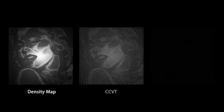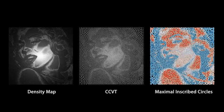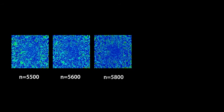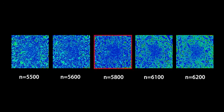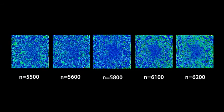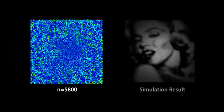We then compute the capacity-constrained Voronoi tessellation based on this density map, and inscribe a maximal circle inside each tessellation cell. We evaluate the difference between the resulting disk radius and the desired radius in each cell, and use a binary search for the number of disks that produces the best percentage of the right sizes.